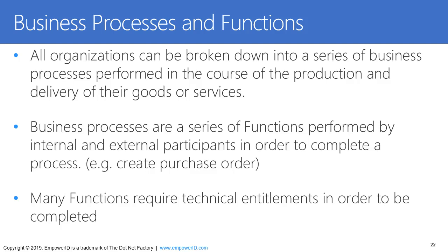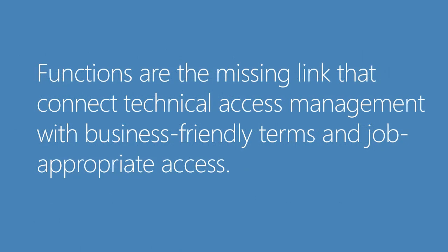An example of a function might be to create a purchase order. Many functions require technical access to be completed — in most companies, creating a purchase order is done in the ERP system, so the user needs actual technical access, application roles, or entitlements granted to them in that application to log in and access the screens and transactions to create this purchase order. Functions are really the link or bridge that connects the business concepts an organization performs to the technical system access that grants the abilities in a technical system to perform these functions — marrying the business understanding of what people do with the technical understanding of how that access is delivered.